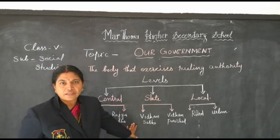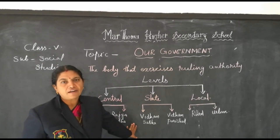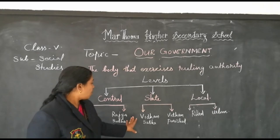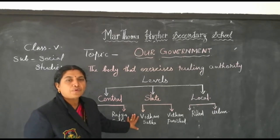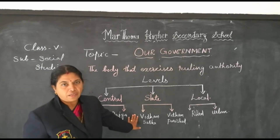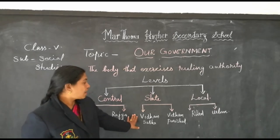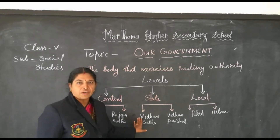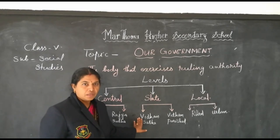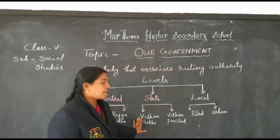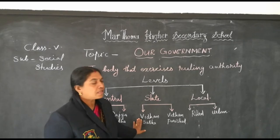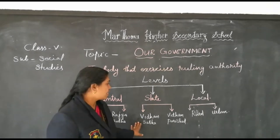The members are elected on the basis of universal adult franchise. Universal adult franchise means all the people above the age of 18 have the right to elect their representatives for the formation of the government without any discrimination. That is called the universal adult franchise.